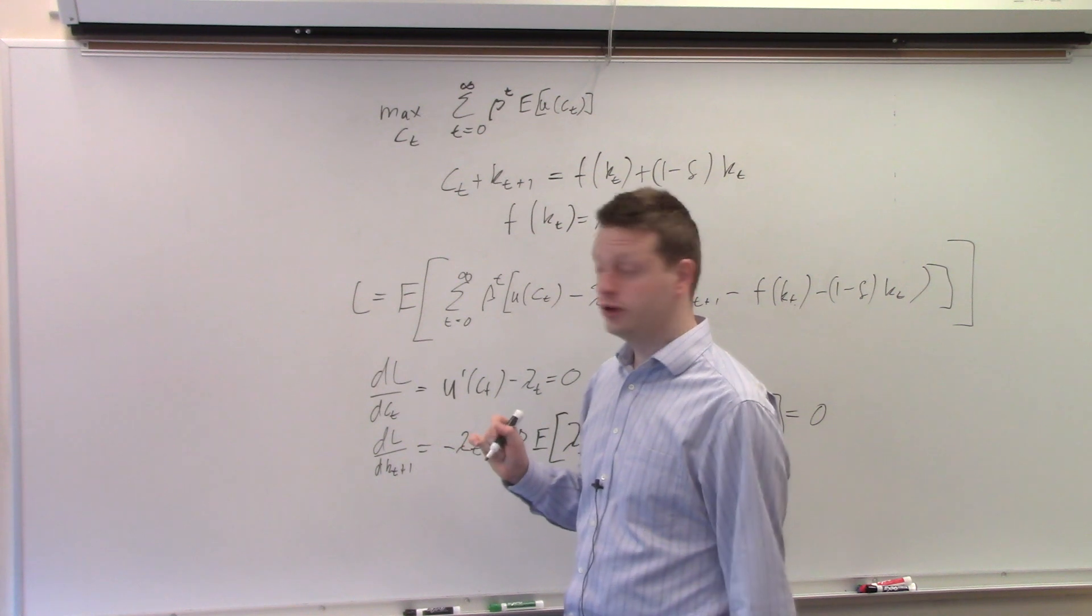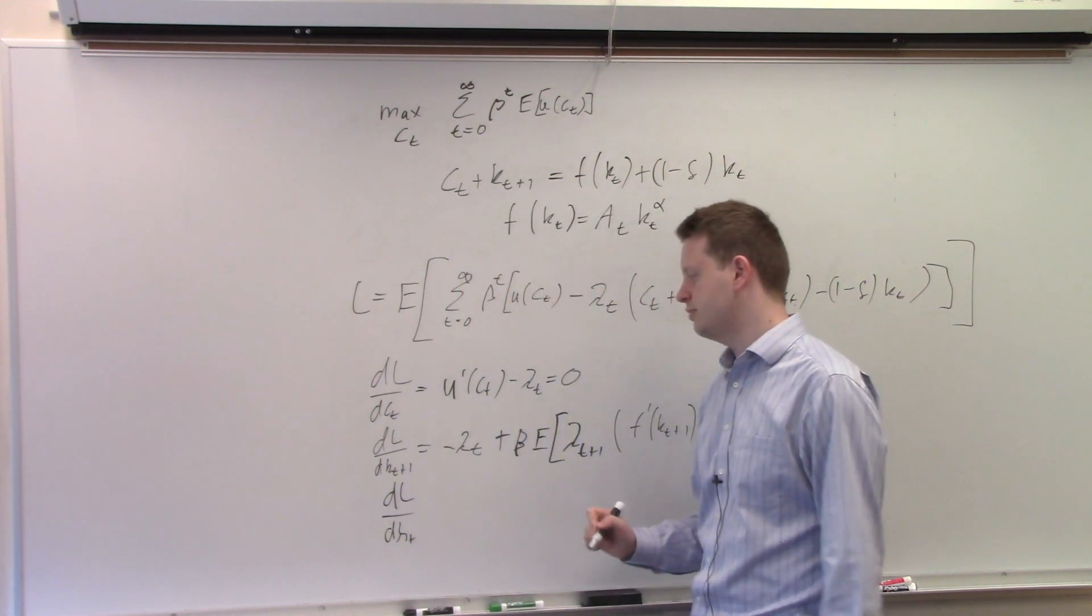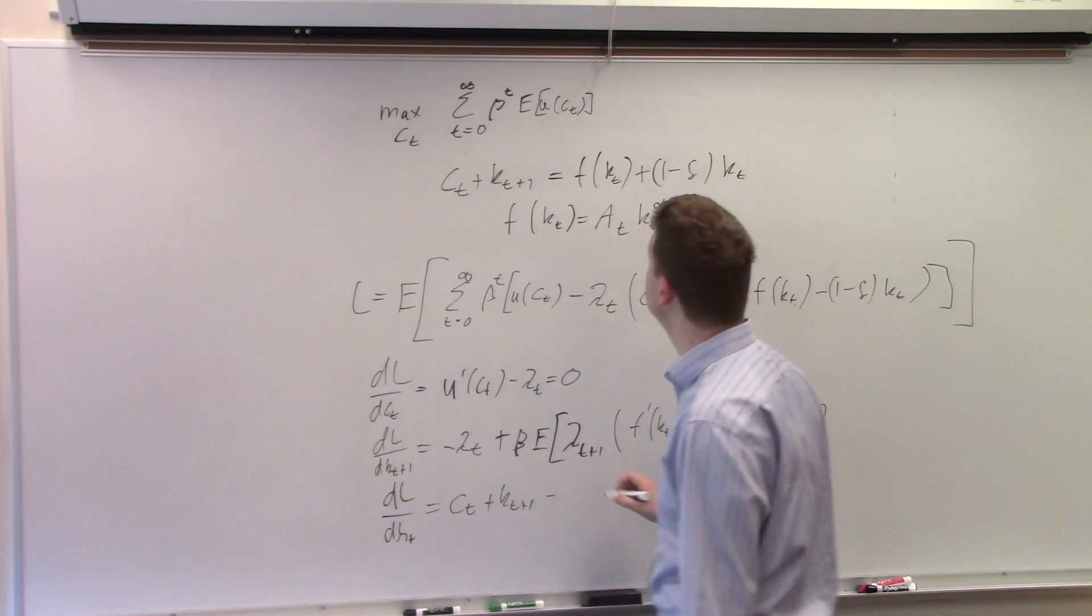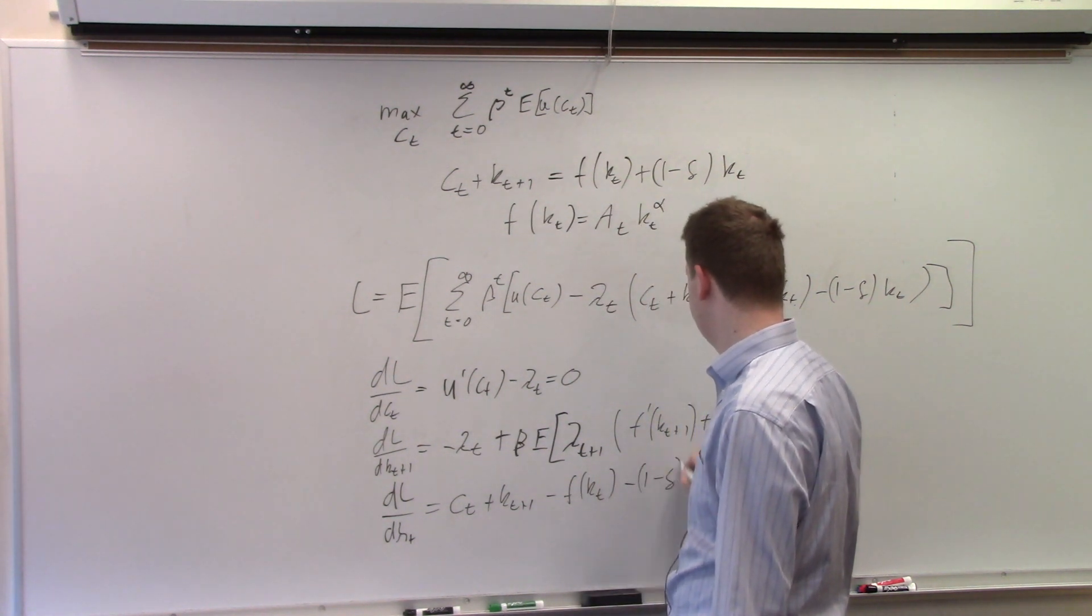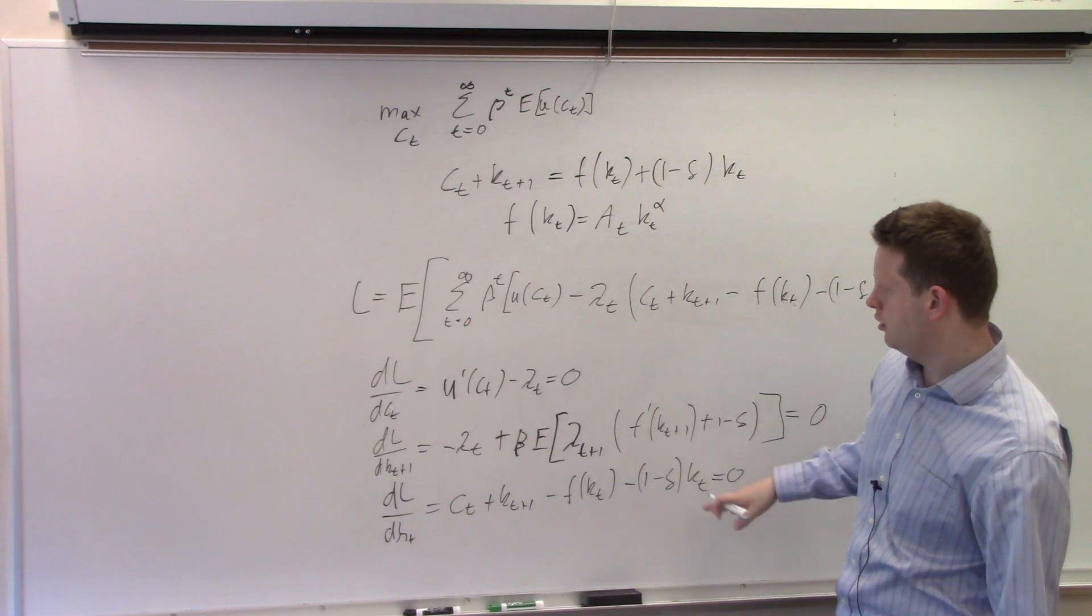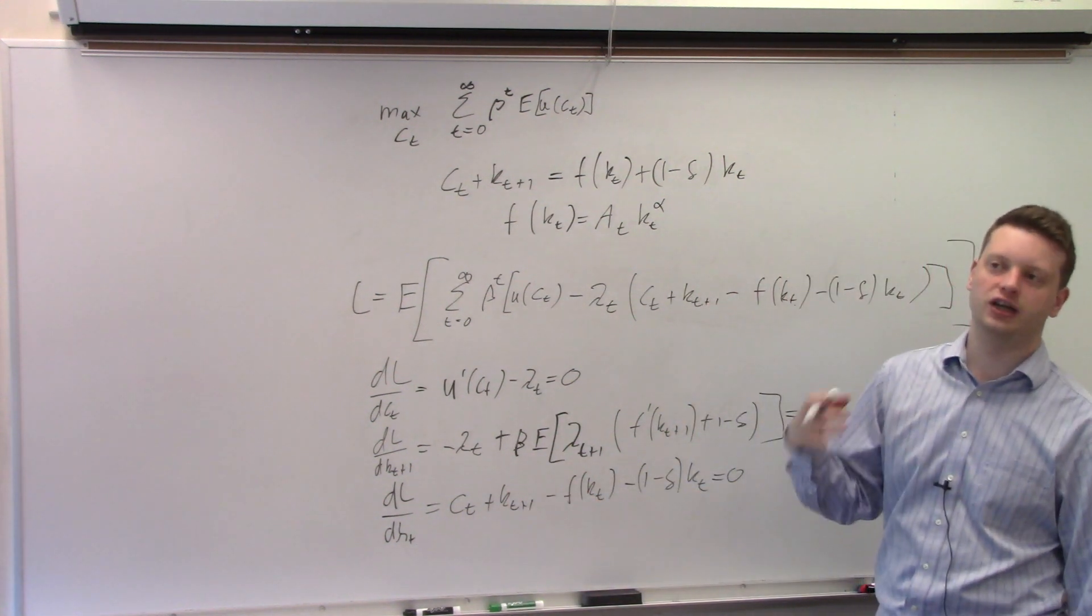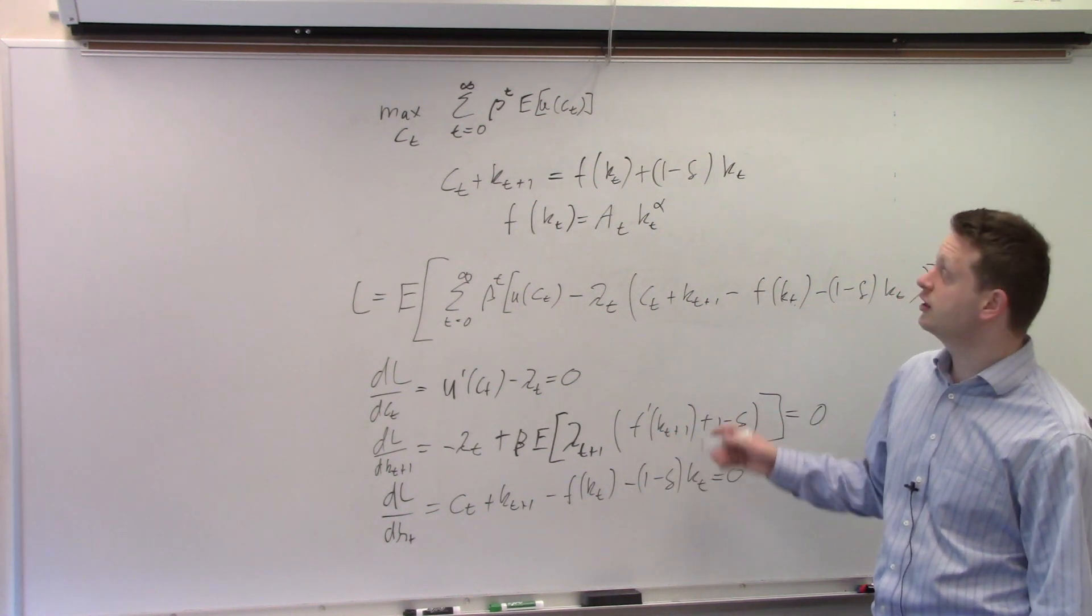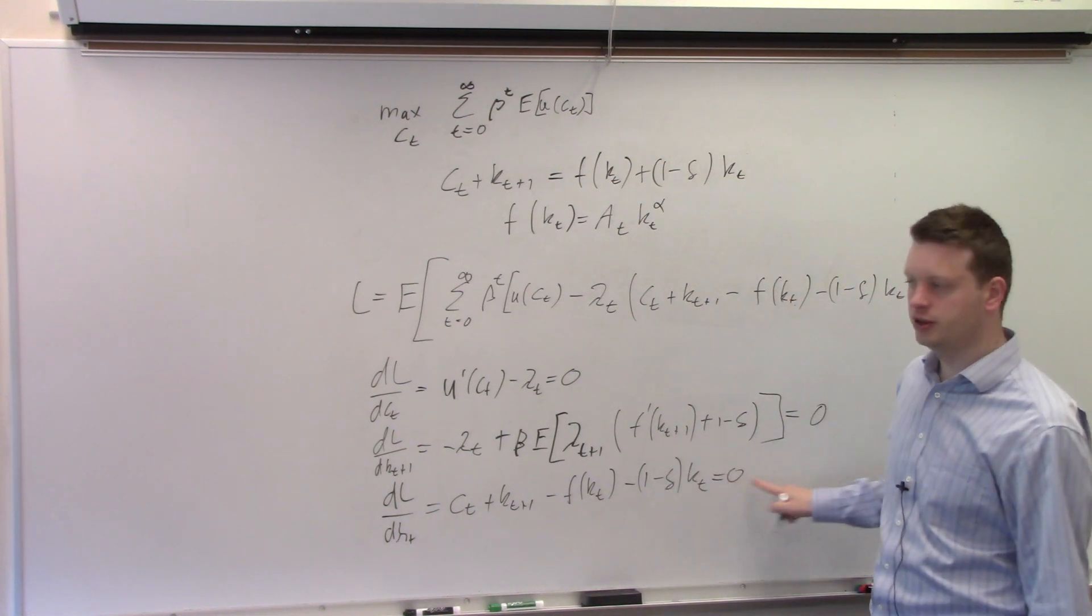And the third one we need is with respect to lambda. So derivative with respect to lambda_t is simply c_t plus k_{t+1} minus f of k_t minus (1 minus delta) times k_t equals zero, which is just this constraint. Note that I flipped the signs here. So it would be actually negative for these two and positive for these. If you want to do second order conditions, you need to make sure the signs are right. Since I don't do second order conditions here, because the functional form here is assumed to be okay, I just flipped it because it's equal to zero.